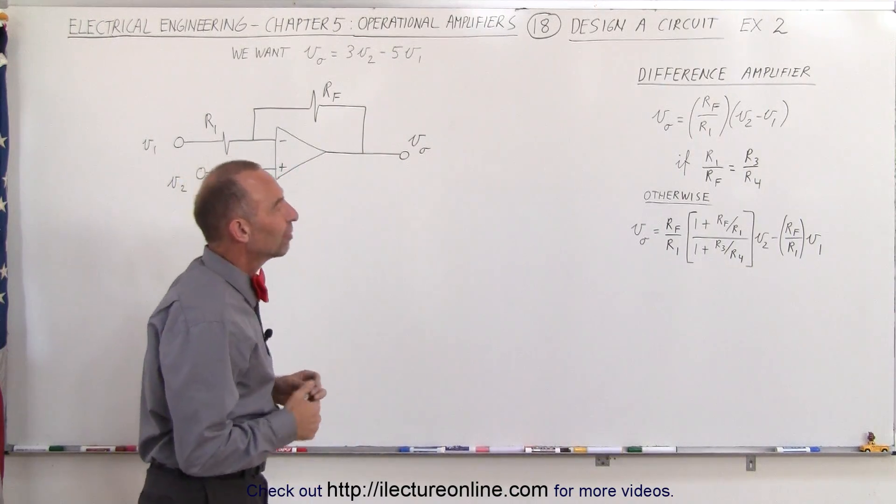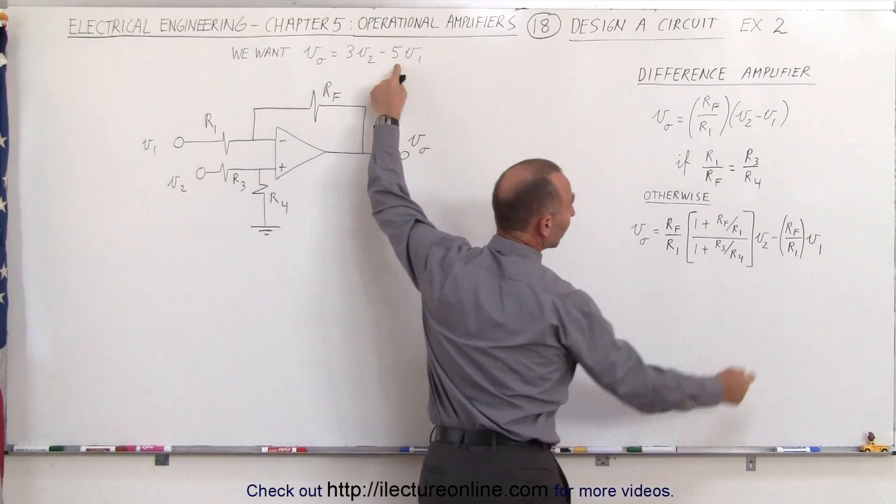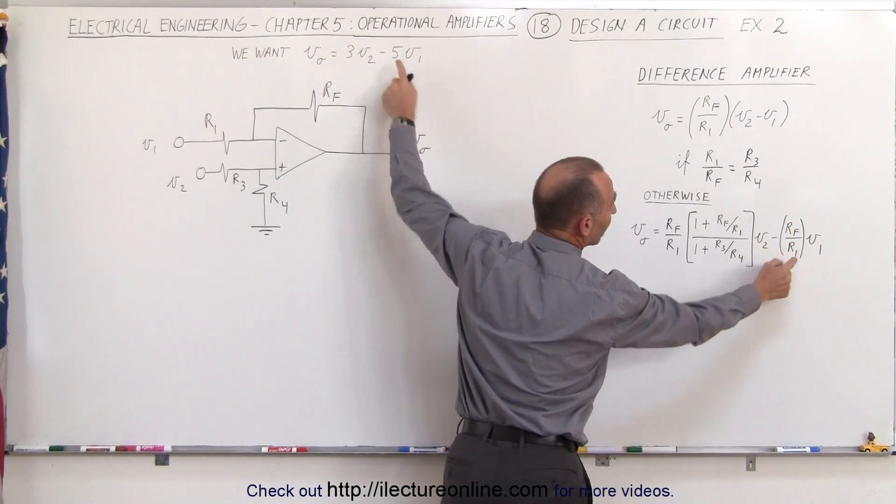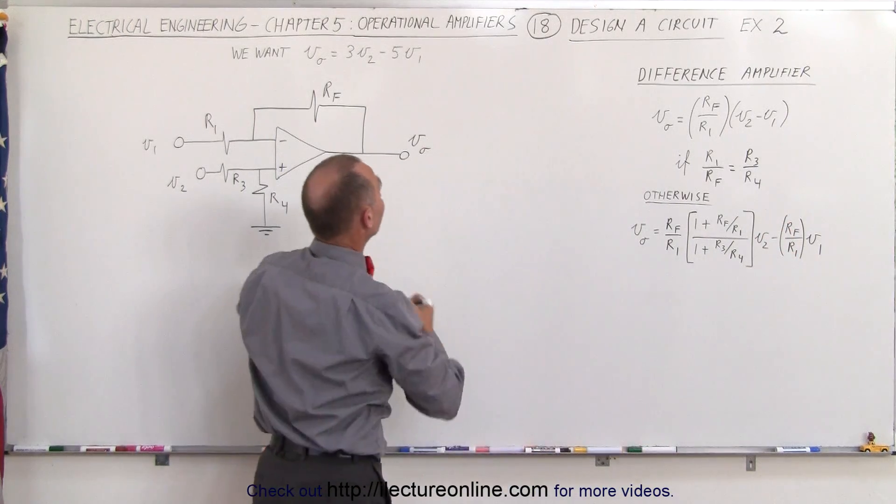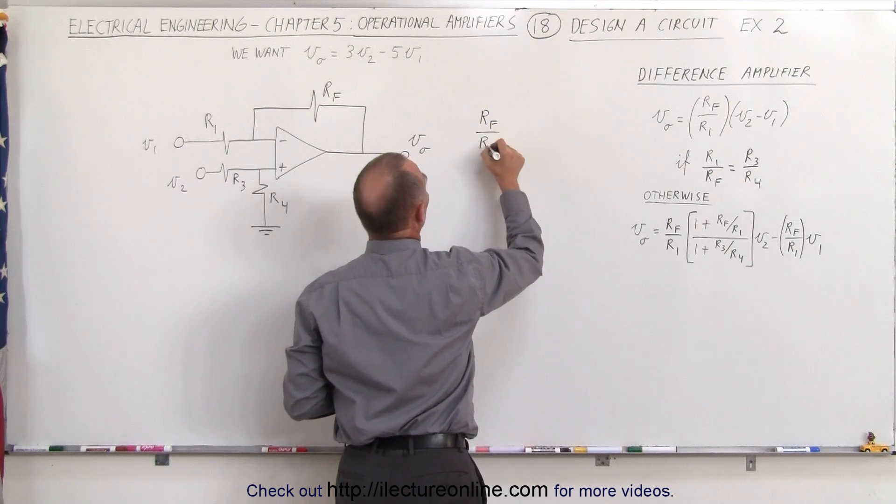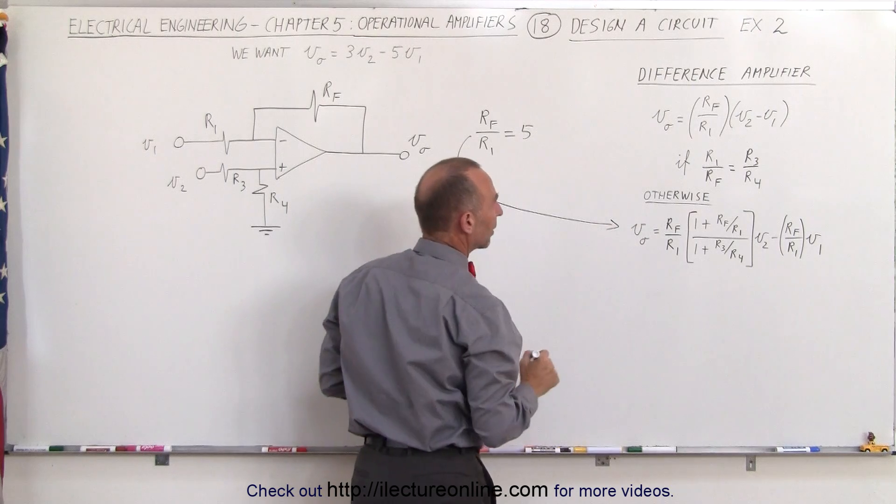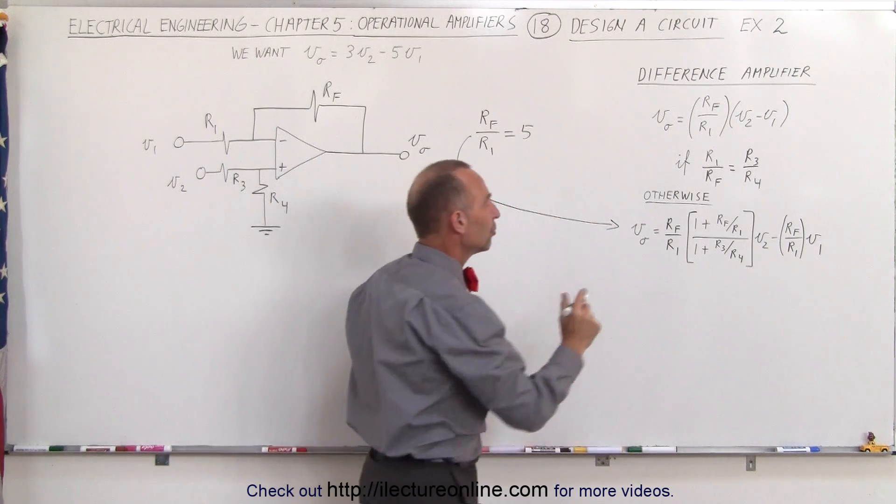First of all, let's find the coefficient in front of V1. Since that has to be equal to 5, that means that RF divided by R1 must equal 5. And that's pretty straightforward. So we can say that RF divided by R1 must equal 5 and if we plug that into the equation right there, we get the following intermediate result.